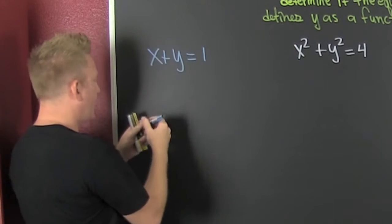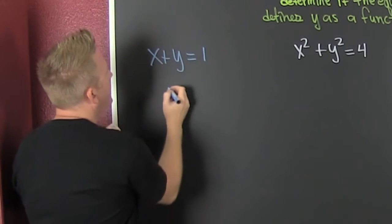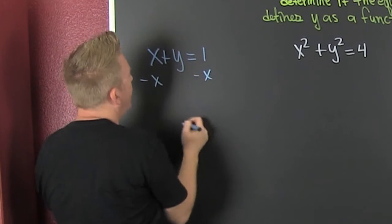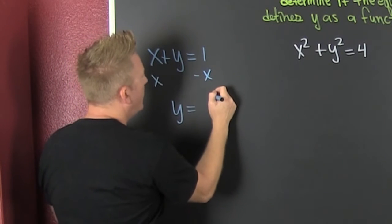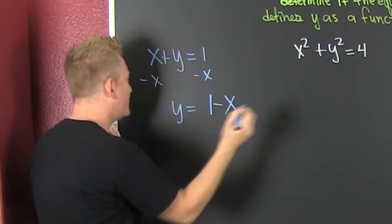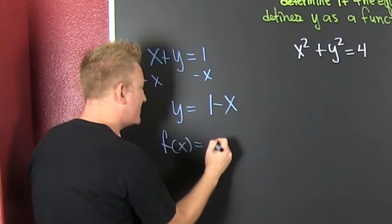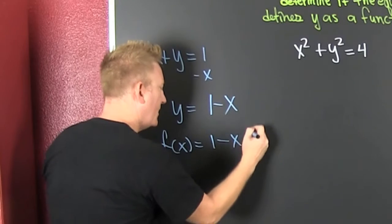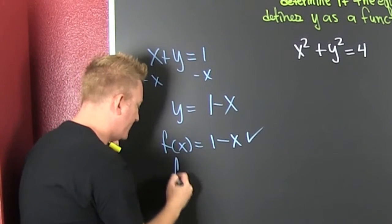So can I solve for y? I subtract off that x, I subtract off that x, and then y is equal to 1 minus x. That's a function for x. Check — you are a function!